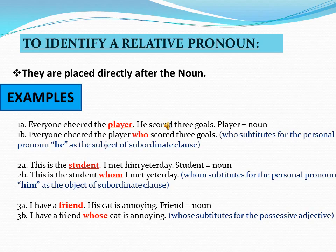Example three A: 'I have a friend, his cat is annoying.' Here, 'friend' is a noun. In sentence three B: 'I have a friend whose cat is annoying.' Here, 'whose' substitutes for the possessive adjective 'his.' So 'whose' is used as a possessive adjective. The relative pronouns who, whom, and whose are shown in these examples.